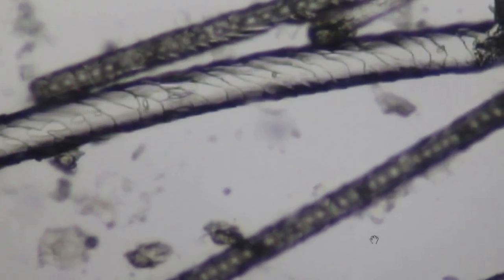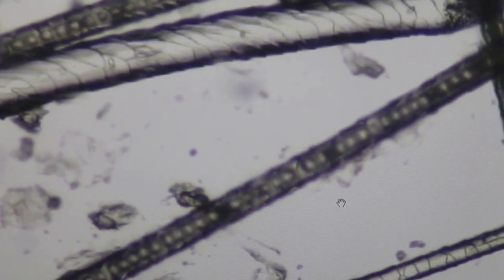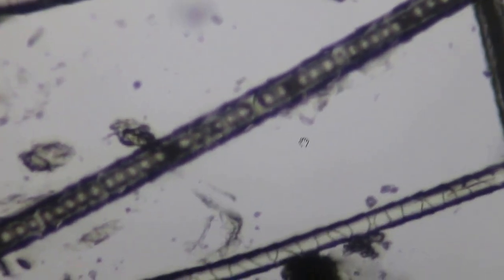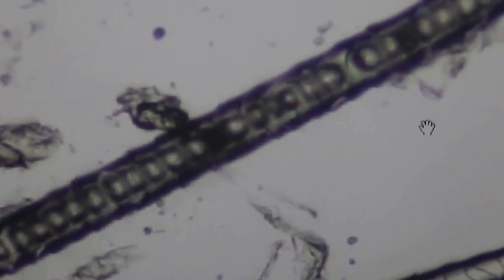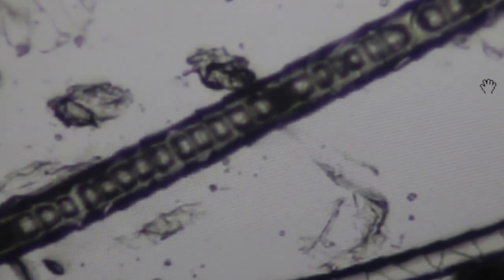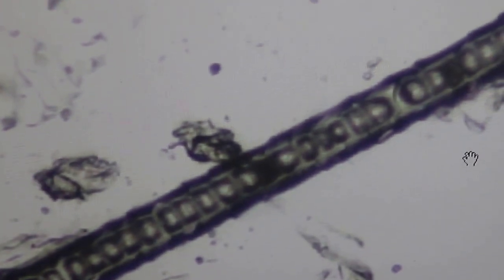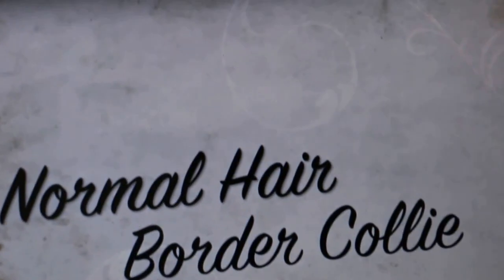Now the normal hair of the dog, or of this Pomeranian - in the medulla there's a lot of these segments. This is normal. If there's ringworm, you will see the rough areas. We'll show the normal hair first.